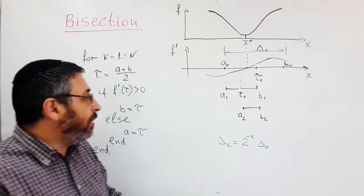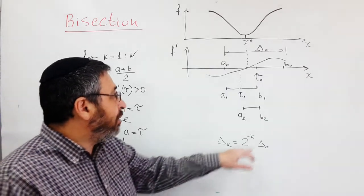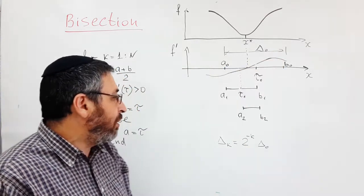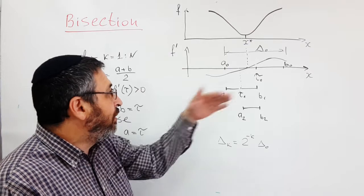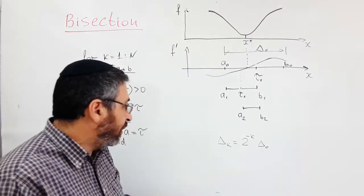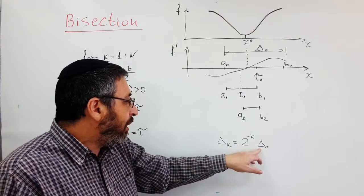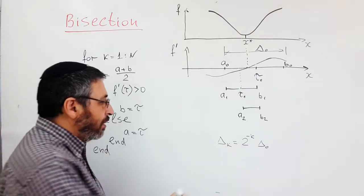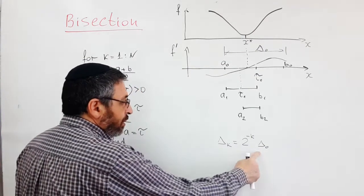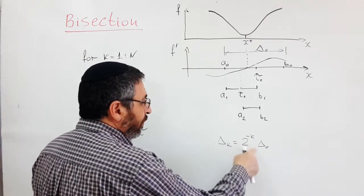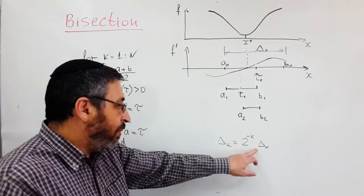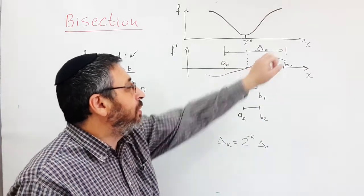The method is very simple and it reduces the uncertainty interval rather fast. It divides by two at every iteration, so after k iterations the length of the uncertainty interval is 2^(-k) multiplied by the length of the original interval.